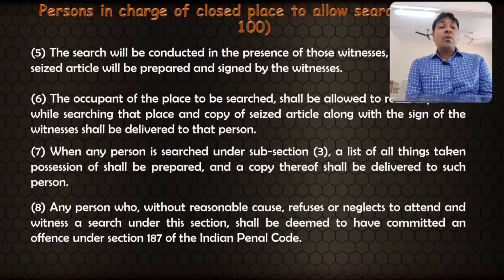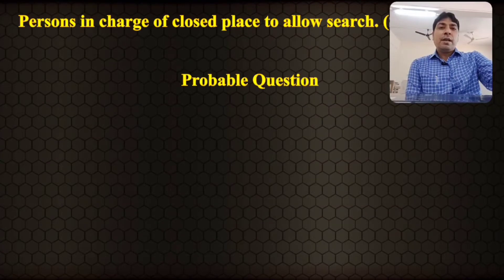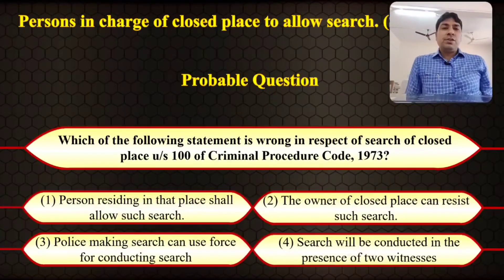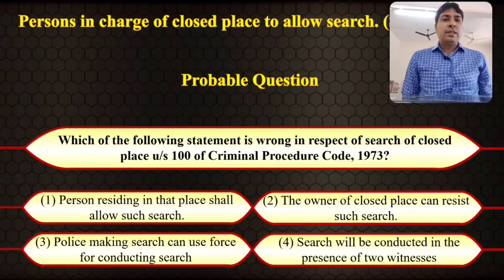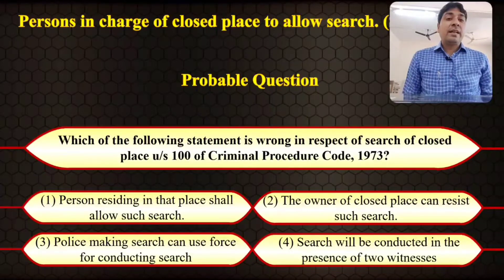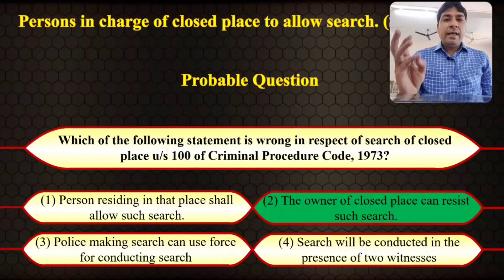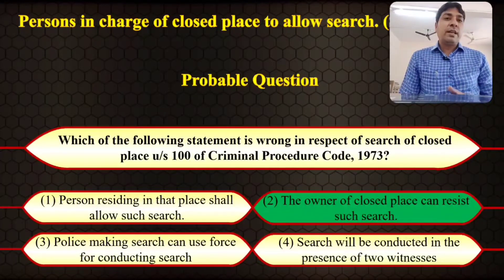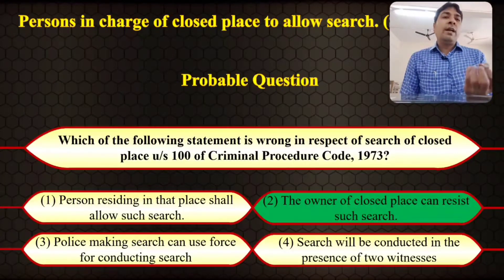If any person refuses to remain present as a witness, that person shall be liable for an offense under Section 187 of the Indian Penal Code. Probable question on Section 100: 'Which of the following statement is wrong in respect of search of a closed place under Section 100 CrPC?' The correct answer is the second option — 'the owner of closed place can resist such search' — because the owner cannot resist the search.